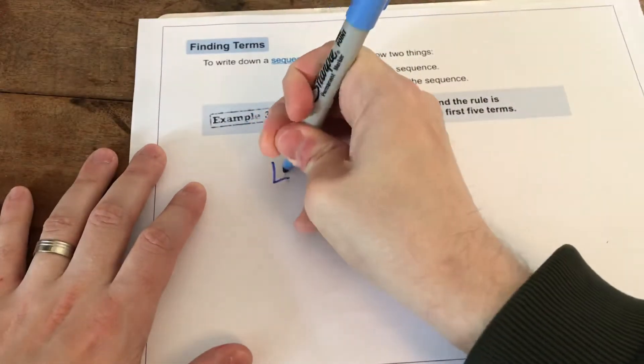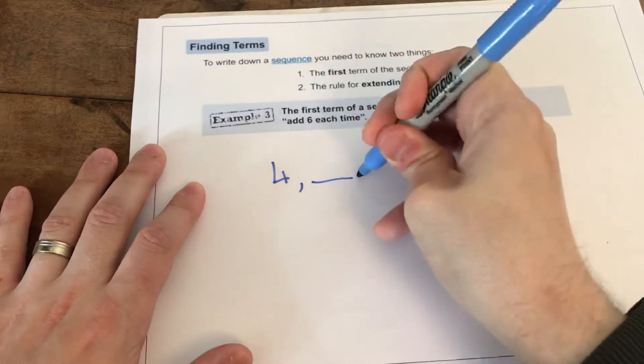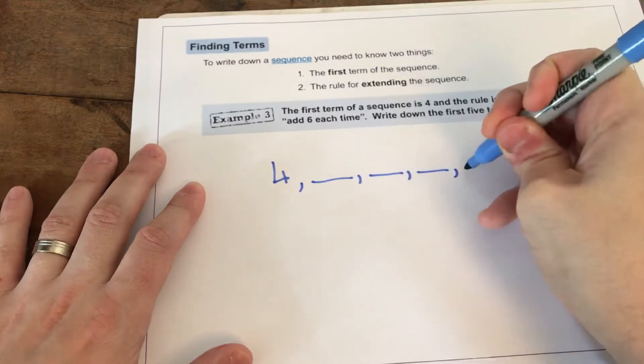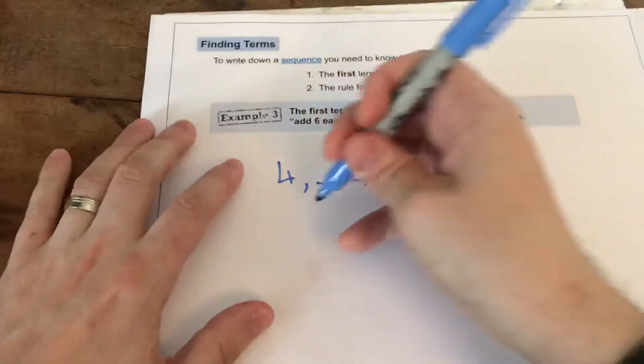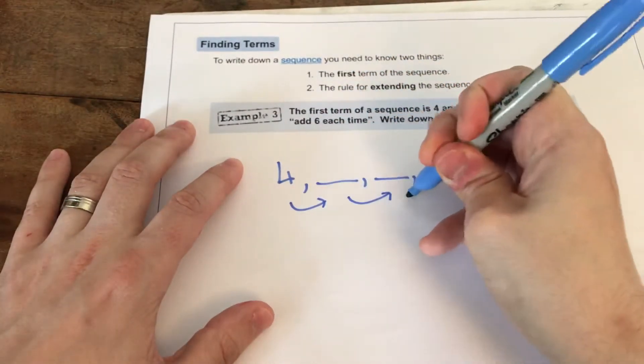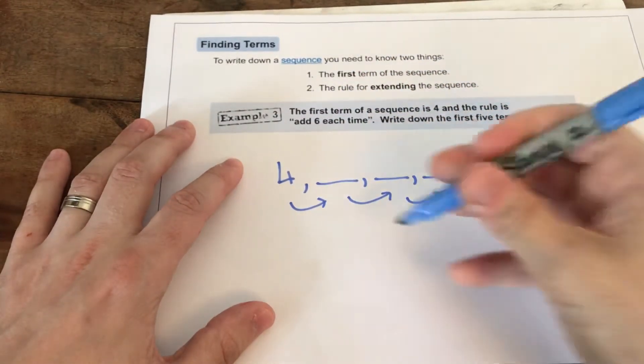So, what you do is you start with 4, and then you're going to work out the next 4 terms so that you have 5 terms altogether. So, the term-to-term rule is add 6.